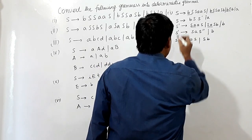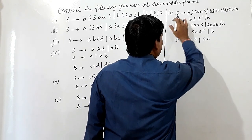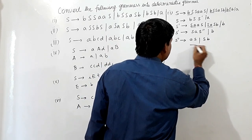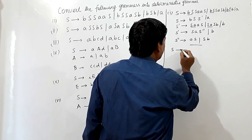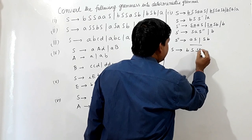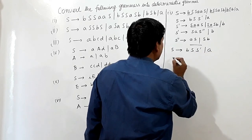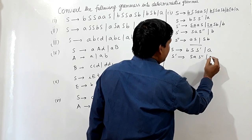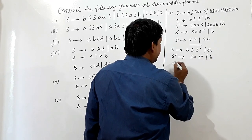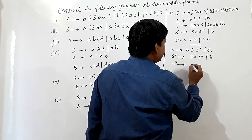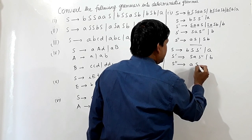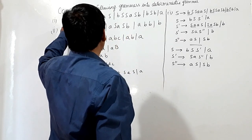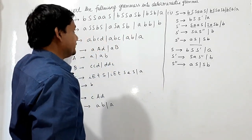So this whole deterministic grammar can be written as: S produces BS-dash or A, S-dash can be written as SAS-double-dash or B, and S-double-dash can be written as AS or SB. This is the deterministic grammar for the first grammar.